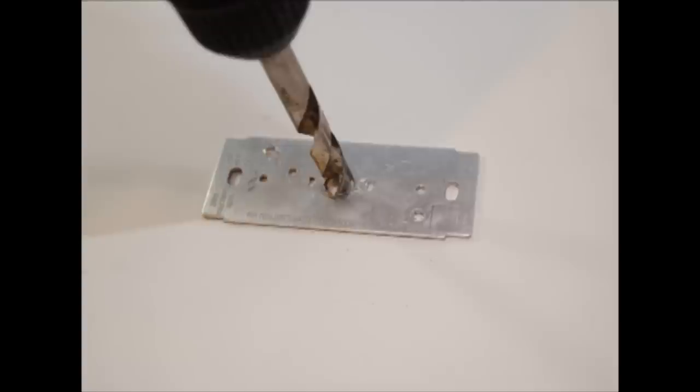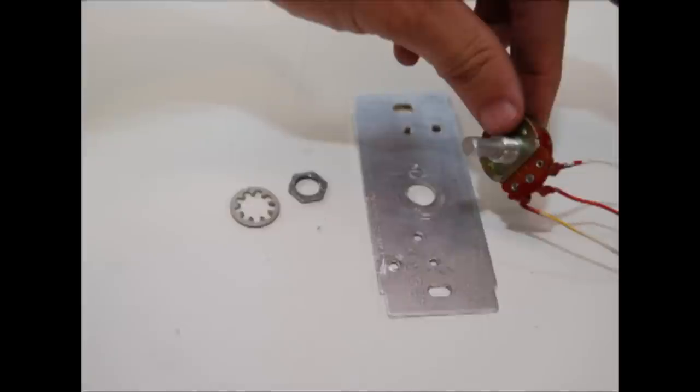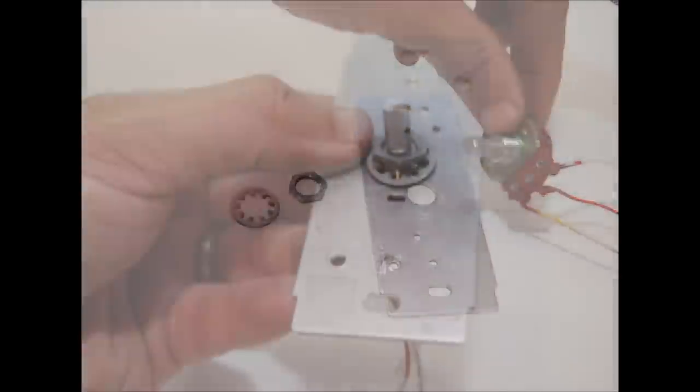Then you're going to mount your 10k potentiometer to this metal bracket. If you need to, drill a hole in the metal bracket to make it larger. Now go ahead and mount the potentiometer to the bracket.